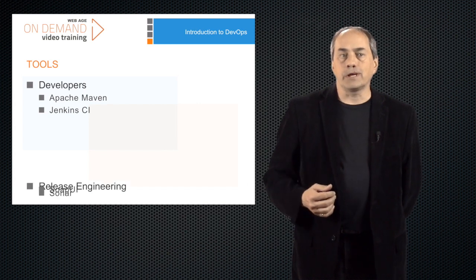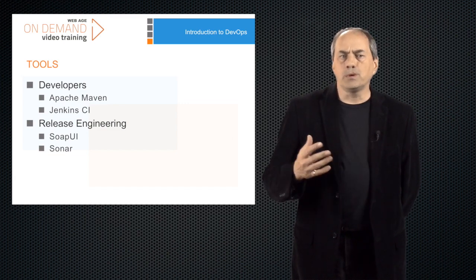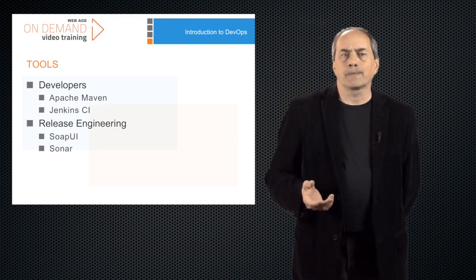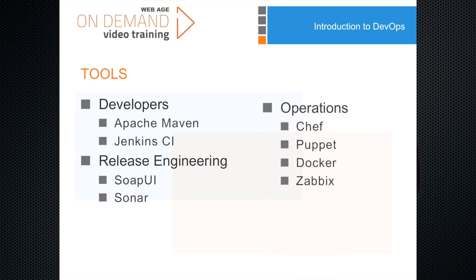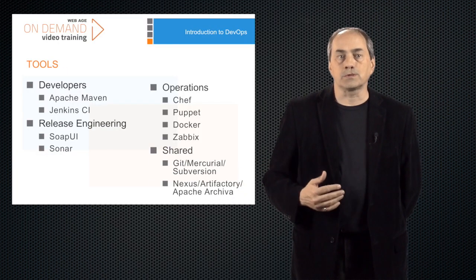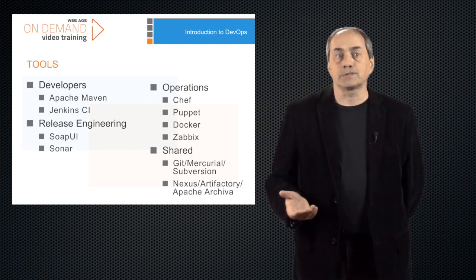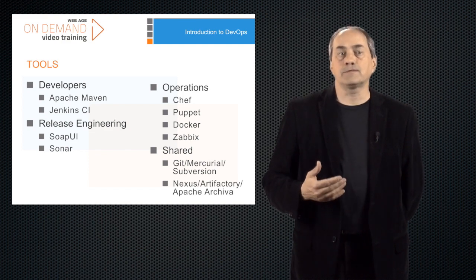In the release engineering area, we have testing tools, quality assurance tools, and release auditing tools — things like SOAP UI and Sonar. Towards the operations end of the spectrum, we get deployment automation tools, provisioning tools, cloud tools, and monitoring tools — things like Chef, Puppet, Docker, and Xavix. Some tools are shared across the entire process, like artifact management and software configuration management or version control tools: Git, Mercurial, or Subversion for version control; Nexus, Artifactory, or Apache Archiva for storing and serving artifacts.